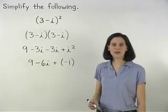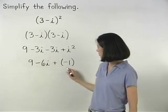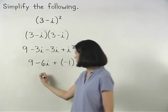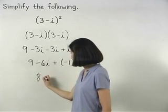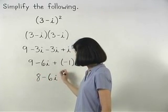Finally, combining like terms, 9 plus negative 1 is 8, so our final answer is 8 minus 6i.